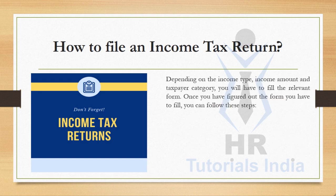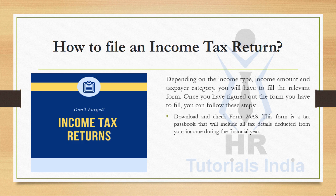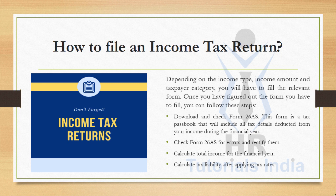How to file an income tax return? Depending upon the income type, income amount, and taxpayer category, you will need to fill the relevant form. Once you have figured out the form, follow these steps: download and check Form 26AS, which is a tax passbook that includes all tax details deducted from your income during the financial year. Check Form 26AS for errors and rectify them, calculate total income for the financial year, then calculate tax liability after applying tax rates.